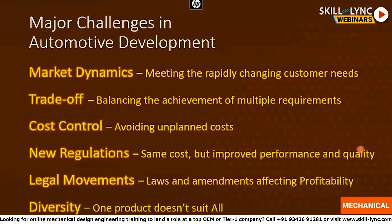And finally, the sixth challenge is diversity. One product doesn't suit all markets — you cannot produce just one model of car and sell it everywhere. You need to have around 10 different varieties of cars. Of course, as you increase the number of varieties, the complexity of development also increases. So everything should be considered when doing product development in automotive.